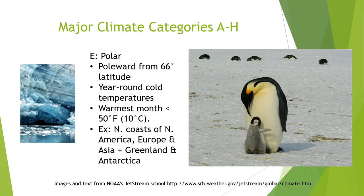The polar regions extend from 66 degrees north or south of the equator to the poles. These areas see year-round cold temperatures, with even colder winters when there's no daylight for a month or two. The warmest month is typically still less than 50 degrees Fahrenheit or 10 degrees Celsius. Examples include the northern coasts of North America — the tip of Alaska and Canada — northern coasts of Europe and Asia, Greenland, and Antarctica in the south.